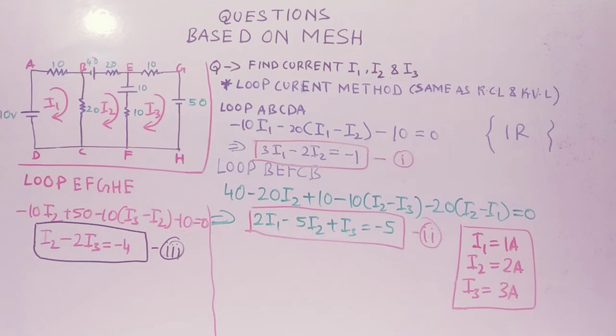Now on solving we get it as 3I1 minus 2I2 equals minus 1. If you are facing any problem in generating these equations, I suggest you to watch my previous three videos. There I have clearly explained how to generate equations by using KCL or KVL either way. Let us continue with another loop, that is BEFCB.